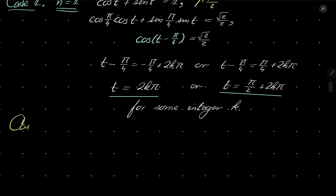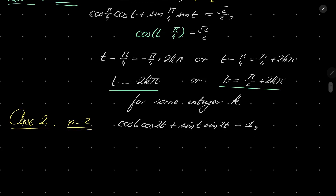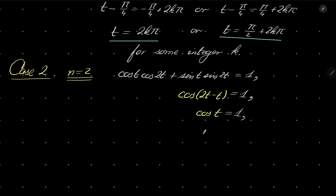Case number 2 will be easier. For n equals 2, our equation is cosine of t times cosine of 2t plus sine of t times sine of 2t equals 1. Using our formula, the left-hand side equals cosine of 2t minus t, which is cosine of t. So cosine of t equals 1, which happens when t equals 2k pi for some integer k.